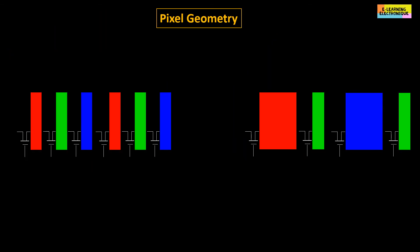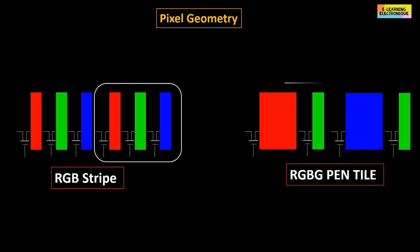On this illustration is represented on the left a classic configuration called RGB stripe. Each pixel is made of three RGB sub-pixels. On the right is represented the geometry of the pixels in RGBG pentile screen. Here each pixel is made of two sub-pixels either RG or BG.